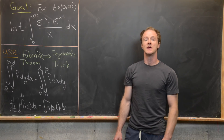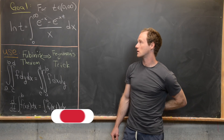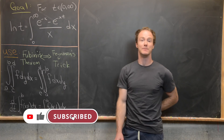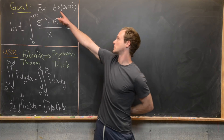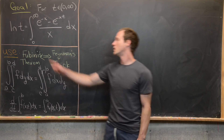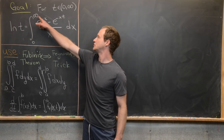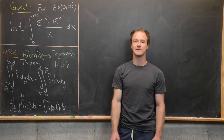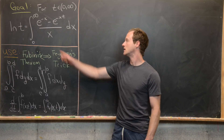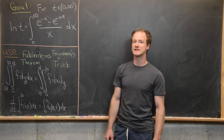Here we're going to look at a nice little integral representation of the natural log function. In particular, we want to show that for all t greater than zero, we have the natural log of t equal to the integral from zero to infinity of (e^(-x) minus e^(-xt)) over x dx. And we're going to use Fubini's theorem,